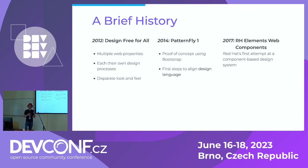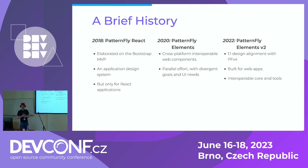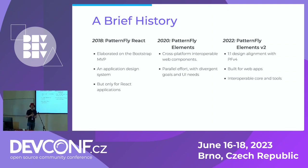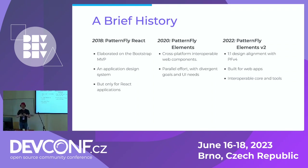A few years later, the Red Hat Elements web components project started as the first attempt at a component-based design system at Red Hat — a parallel effort to Patternfly. In 2018, the Patternfly team decided to double down on the React framework. That was a sensible decision at the time because most of the users — developers consuming the library — were using React. So it made sense to focus on the framework most people were using, even if that meant cutting out non-React use cases. The Patternfly React project elaborated on the Bootstrap MVP, mostly focused towards application development like dashboards and SPAs, but only for React.